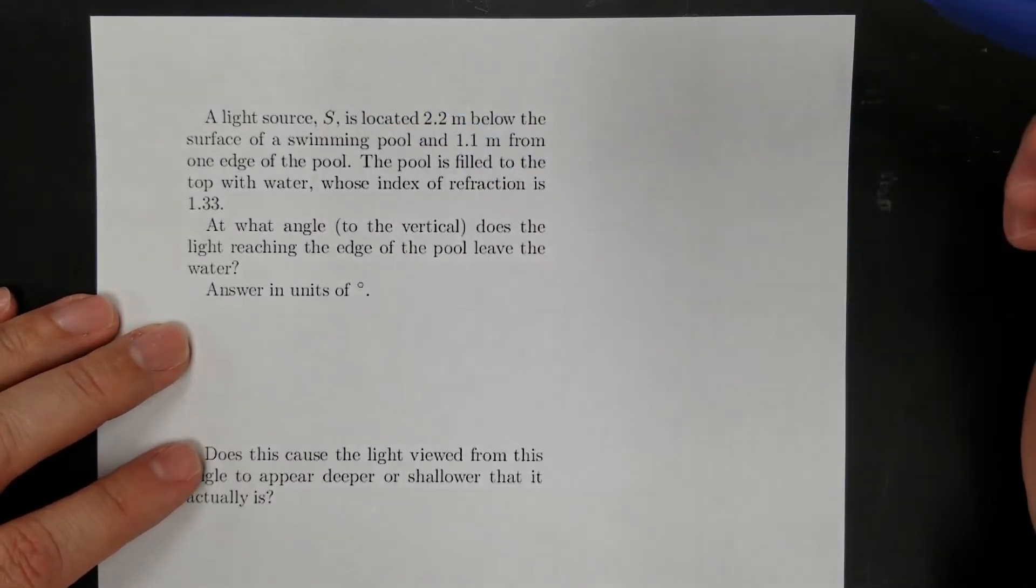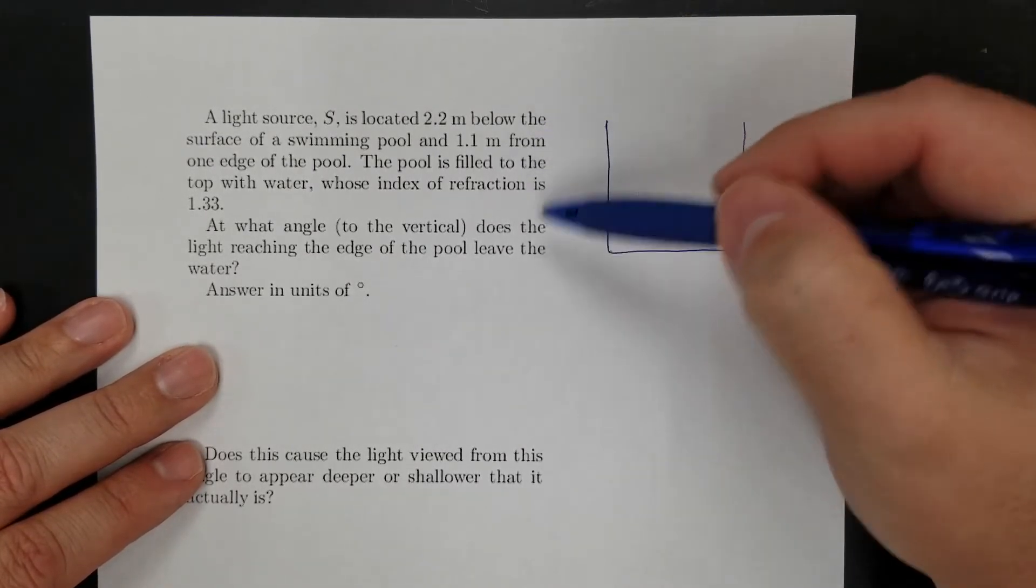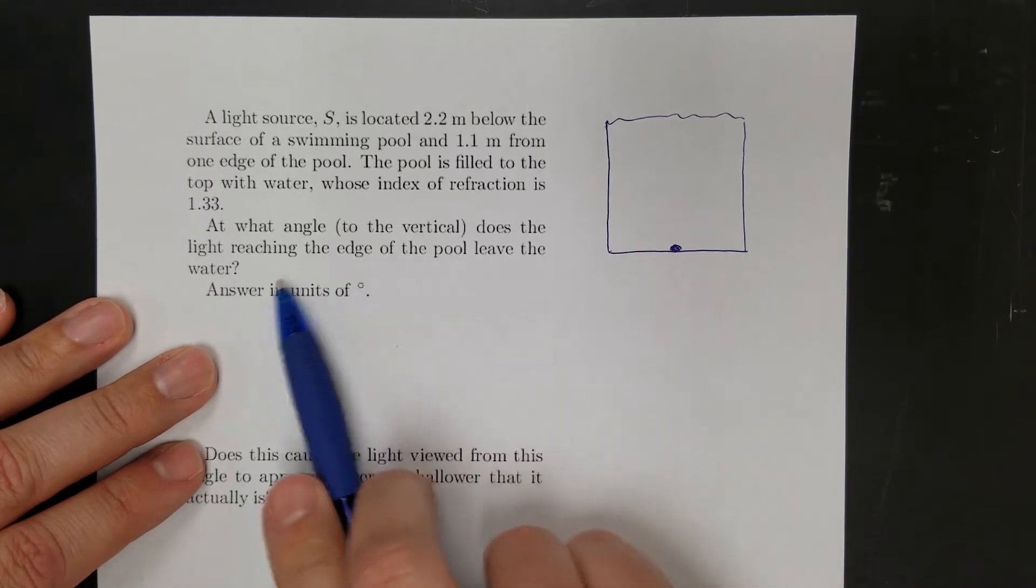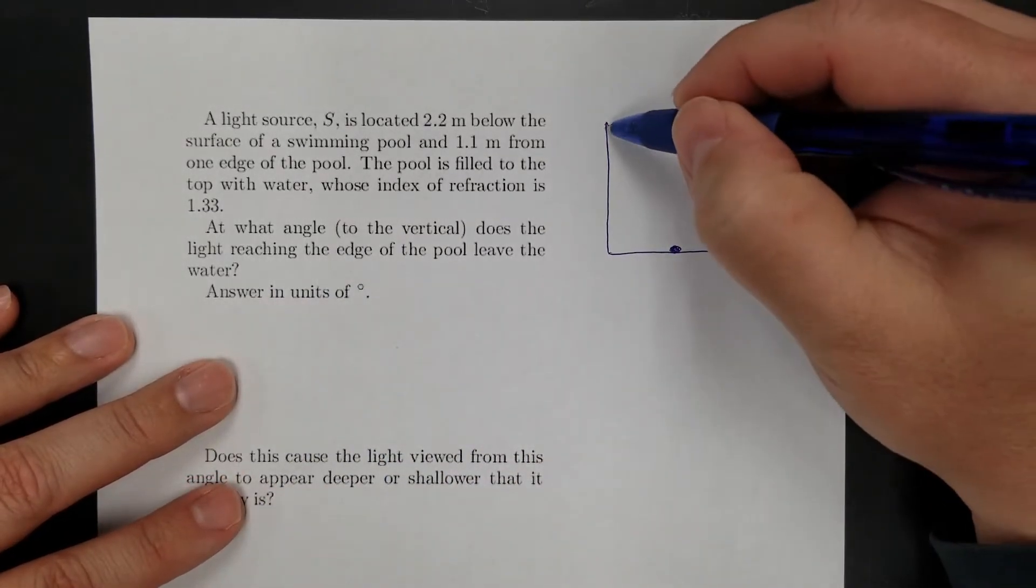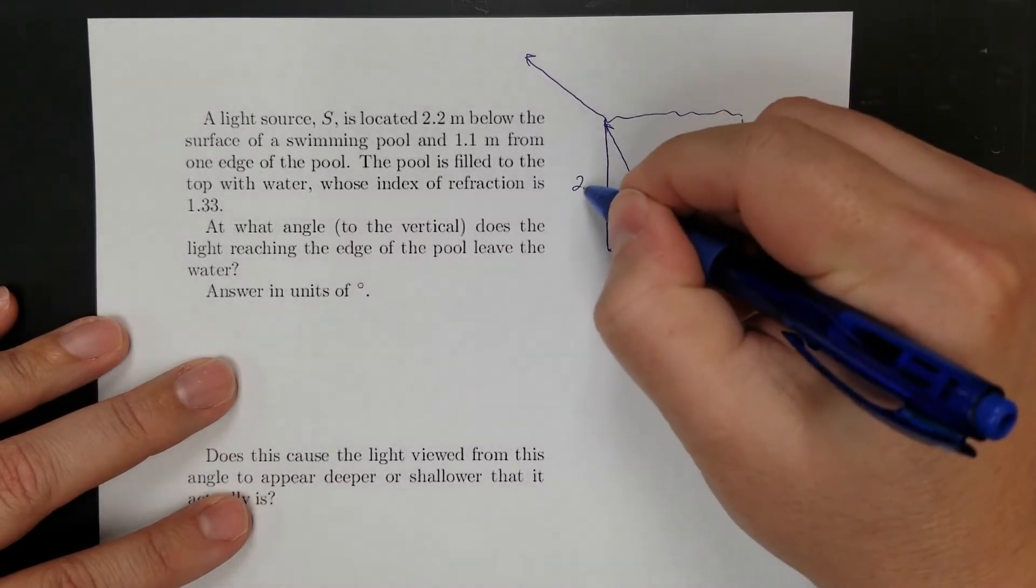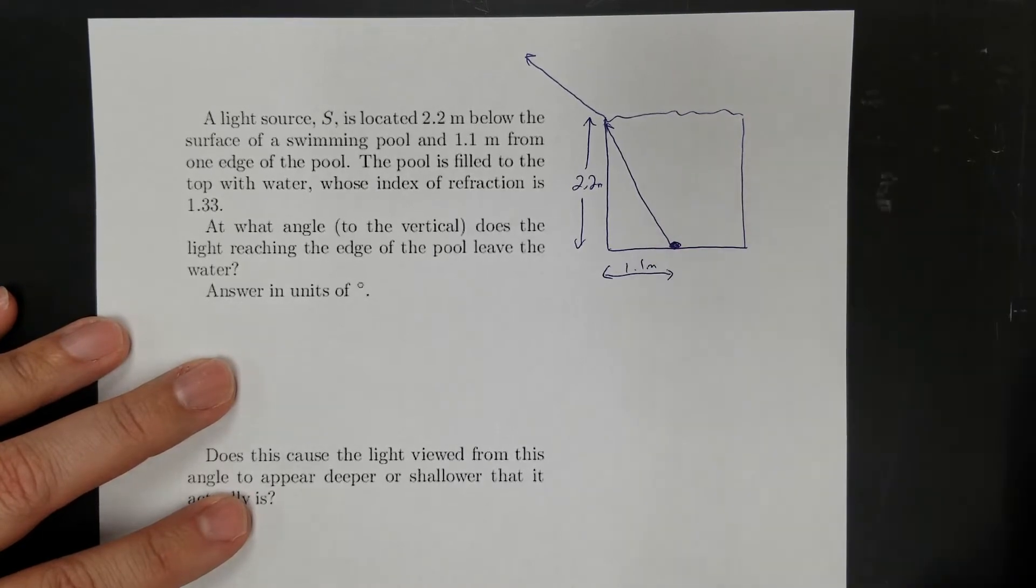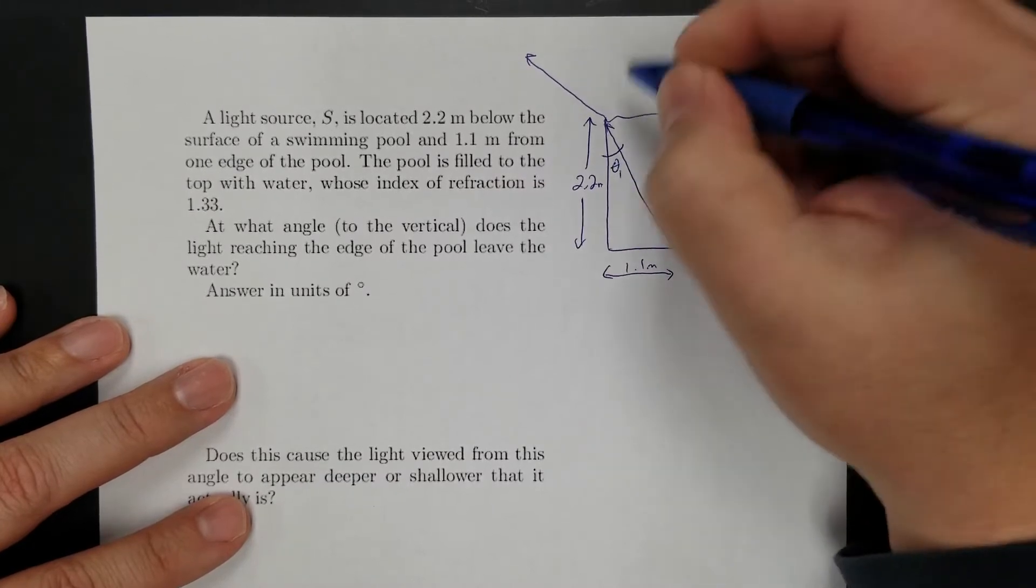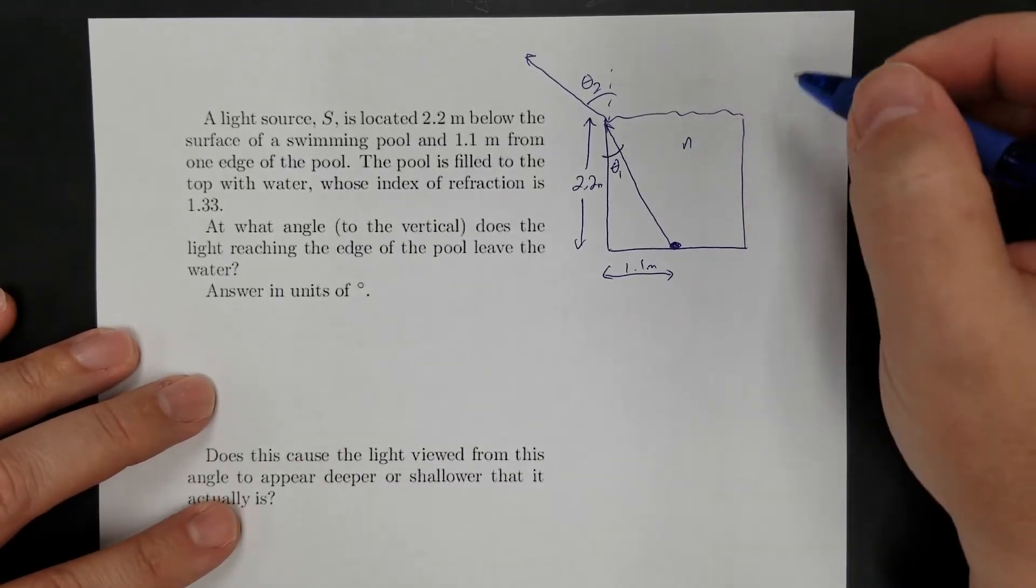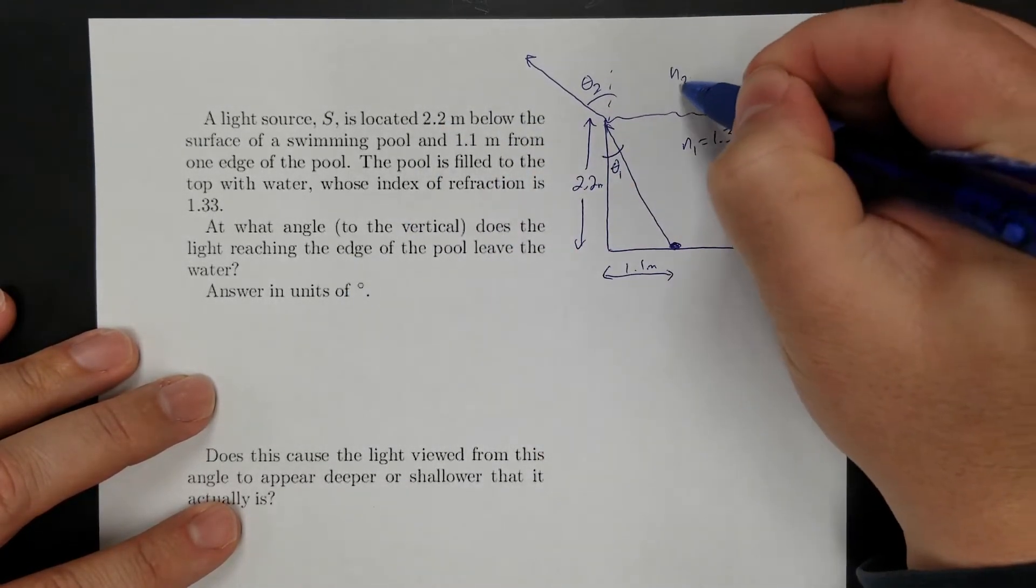Light source located 2.2 meters below the surface of 1.5. Oh no, I already know I'm going to have to draw a picture. Pool is filled to the top with water. So this is one of these. So does the light reaching the edge of the pool leave the water? Okay, so let's say the light's coming here, and then it's going to bend coming out. So this is 2.2 meters from there to there. And this is 1.1 meters. And this is my theta 1. And then right here, this will be theta 2, which is what I'm trying to figure out. So the index of refraction of water is 1.33, and it doesn't tell me, so air is going to be 1.